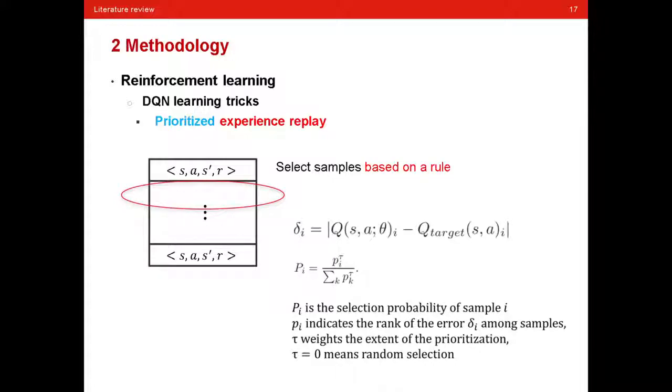To take a step further, we don't select samples randomly for training. Instead, we select based on some rules with the hope for faster learning and better policy. The idea is putting different sampling priority to the memory, so the memory with high priority is more likely to be selected as a training sample.